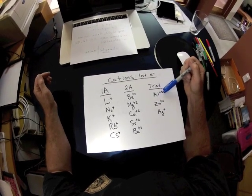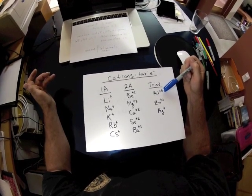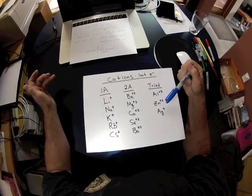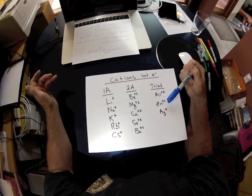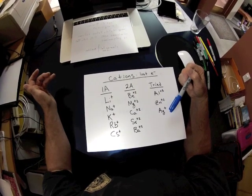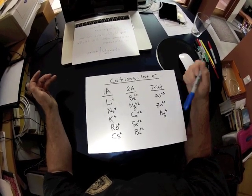In the case of aluminum, it readily gives up three electrons, forming an Al+3 ion. Zinc gives up two electrons, forming Zn+2. And silver gives up one electron, forming Ag+.